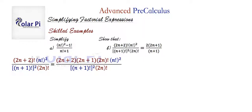However, 2n plus 2 factorial is equal to (2n plus 2) times (2n plus 1), which is 1 less than 2n plus 2, and then times 2n factorial. So (2n plus 2) times (2n plus 1) times 2n factorial is equal to (2n plus 2) factorial.